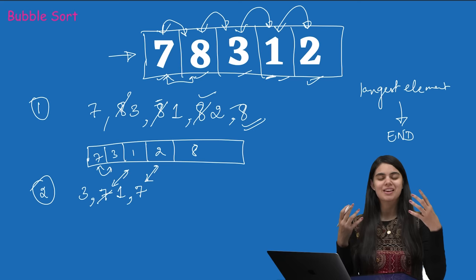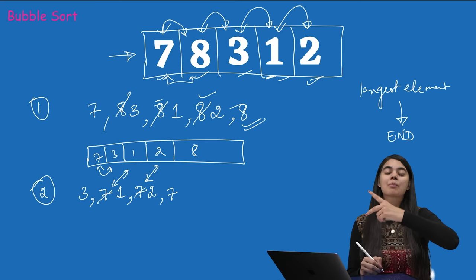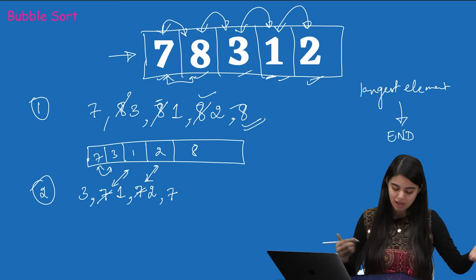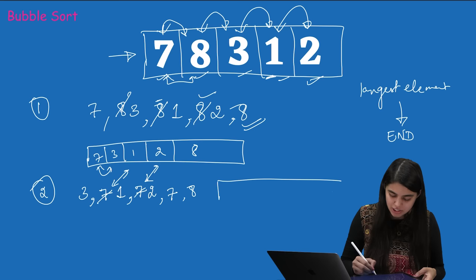We don't compare with the last element because it is already the largest and placed correctly. The final array after the second pass becomes 3, 1, 2, 7, 8.